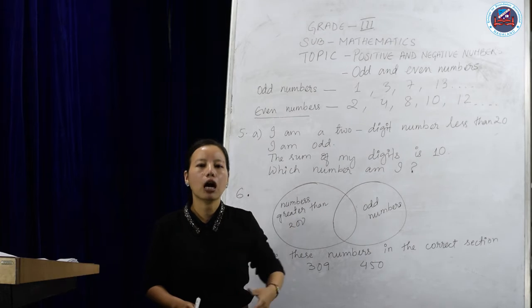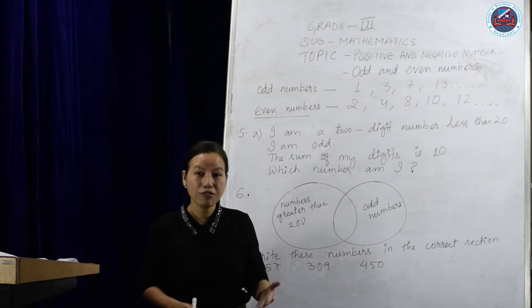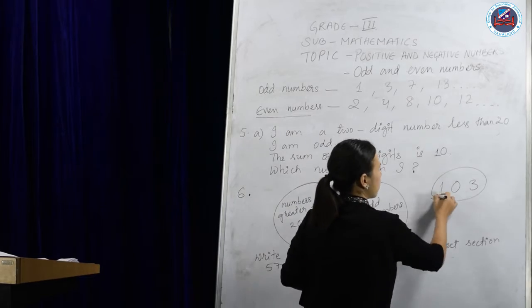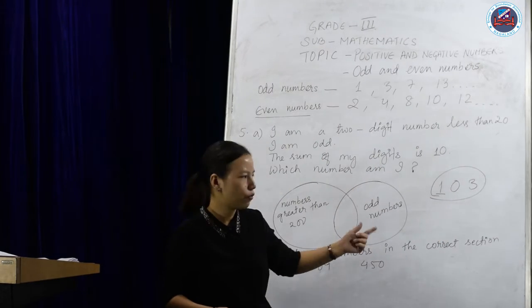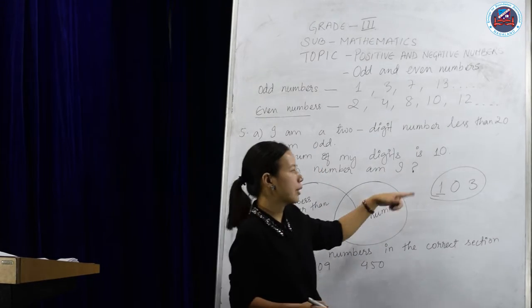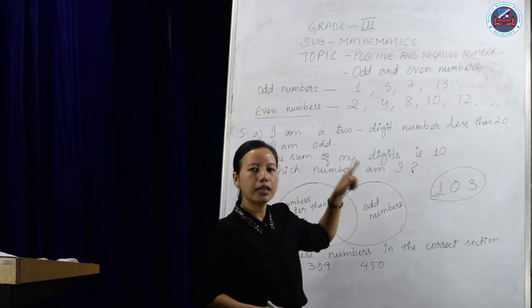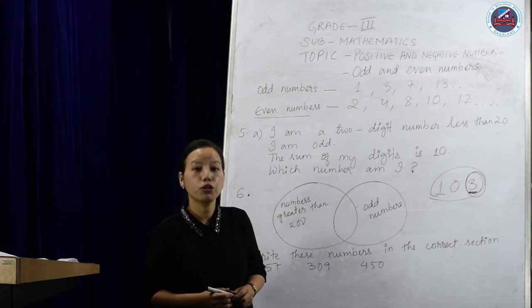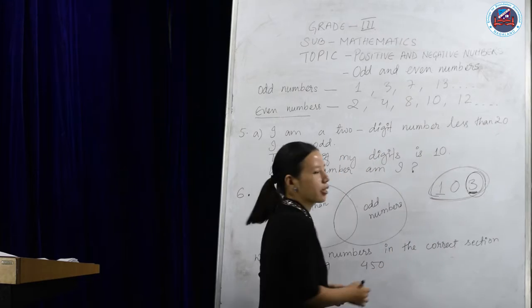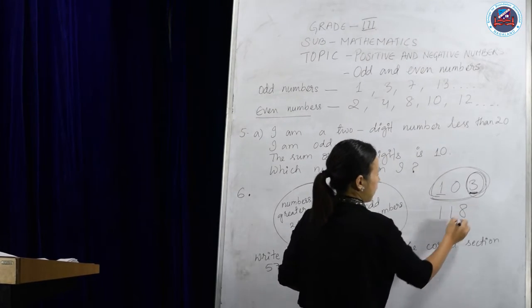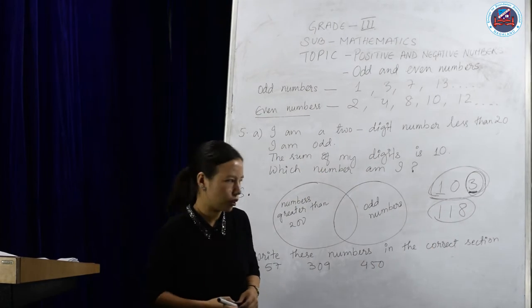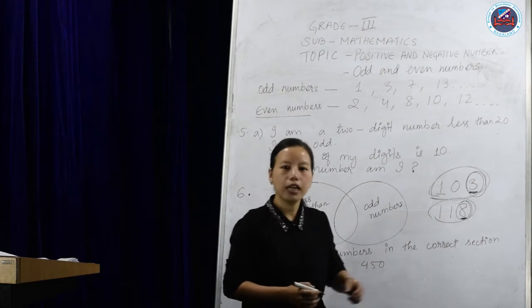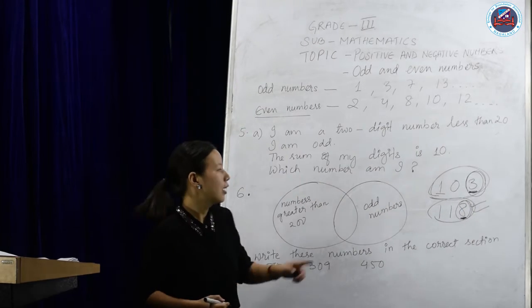What about a bigger number? When it comes to a bigger number, how do we know whether it is even or odd? What we have to do is look at the ones-digit. For example, if I write 103 — your ones-digit is 3, and 3 we don't find in the two-times table, so 103 is an odd number. Now if I write 118 — the ones-digit is 8, and 8 we do find in the two-times table, so 118 is an even number.